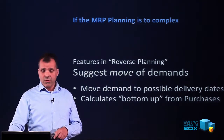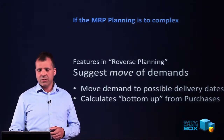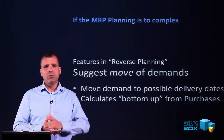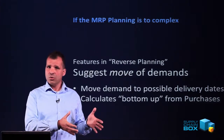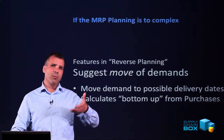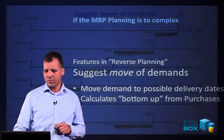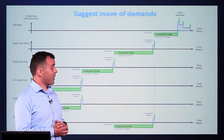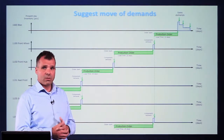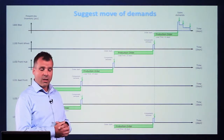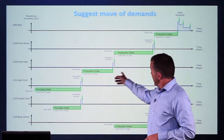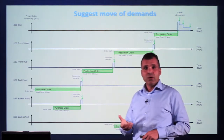The other big feature of reverse planning is to be able to move demands — suggesting to move sales order demands, component demands, and transfer demands. It's possible to calculate bottom-up instead of top-down, as the planning worksheet does, to find demands we cannot fulfill and then suggest moving them. We calculate in low-level code, starting from purchase orders, and calculate the consequences of not having purchase orders on time — up through the hierarchy, through production orders, up to sales orders. For example, this could be a hierarchy starting with item 1000 at the top, with sales demands on sales orders, a production order, and sub-assemblies such as item 1100 (front wheel), front hub, axle front, socket front, and back wheel.